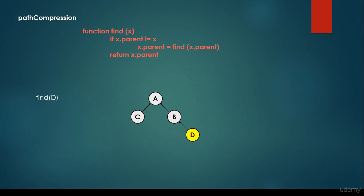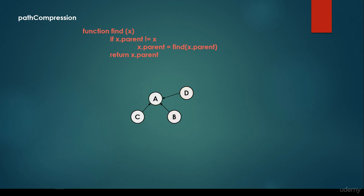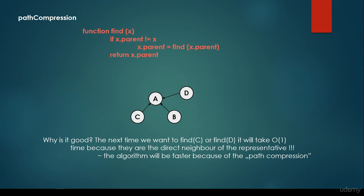What if I call find(d)? I'm going to call find recursively on the parent, which is b. The parent of b is the representative itself. So we just have to rearrange the d vertex and set it to connect directly to the representative. This is why path compression came to be — whenever we want to find d again, it's going to take O(1) constant time complexity to return the representative. The algorithm will be faster because of path compression as well as because of rank.